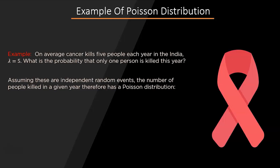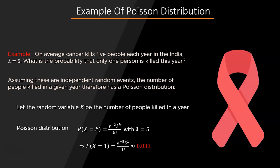Let's work on one example. Suppose on average, cancer kills 5 people each year in India. What is the probability that exactly 1 person is killed this year? We'll assume all these events are independent random events. By the formula, x equals 1, so P(x=1) equals e to the power minus 5, multiplied by 5 to the power 1, divided by 1 factorial, which comes out to be 0.033 — approximately 3.3%. So the probability that only 1 person is killed this year due to cancer is 3.3%.